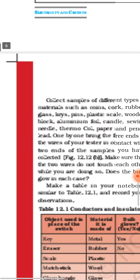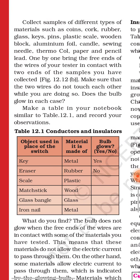Here is a list of examples. A key is a metal — that's why it can glow the bulb. An eraser is rubber — it cannot glow the bulb. A scale is plastic — it cannot glow the bulb. A matchstick is wood — it cannot glow the bulb. Glass bangles cannot glow the bulb. But an iron nail is a metal — it can glow the bulb. Only metal is a good conductor of electricity and can glow the bulb. This is how we can identify conductors and insulators.